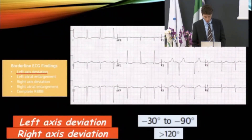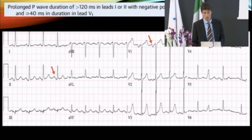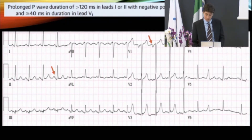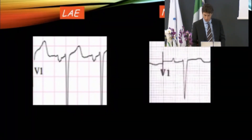Left axis deviation and right axis deviation, if in isolation, are considered to be normal in athletes — we don't do anything about them. Left atrial enlargement is defined by prolonged P-wave duration of more than 120 milliseconds in lead I or II, or a predominant negative portion of the P-wave in V1. It is normal if in isolation, as left atrial enlargement is very common in athletes. Right atrial enlargement is defined by a P-wave voltage of more than 2.5 millimeters in the inferior leads — again, in isolation, it is considered to be normal.